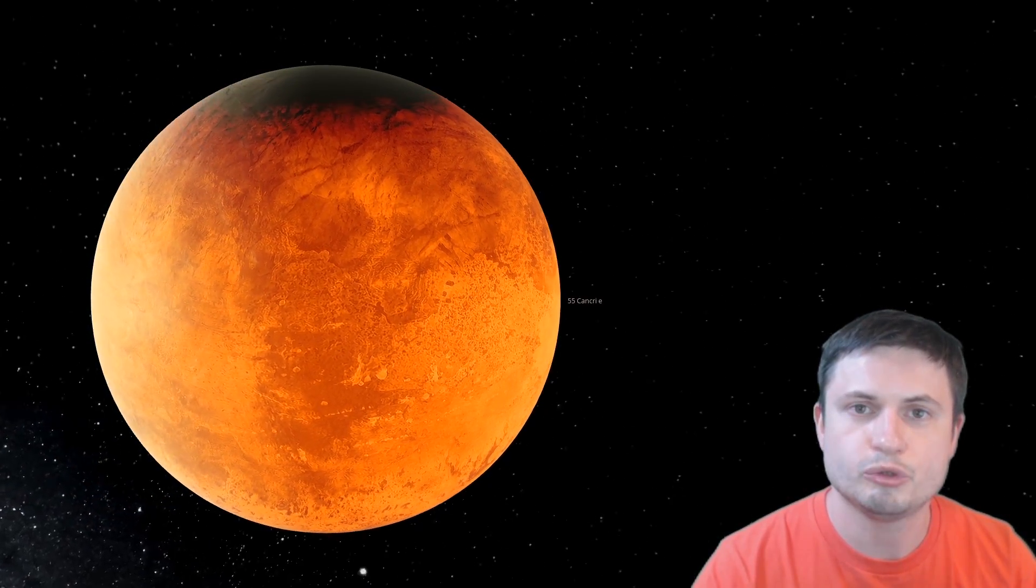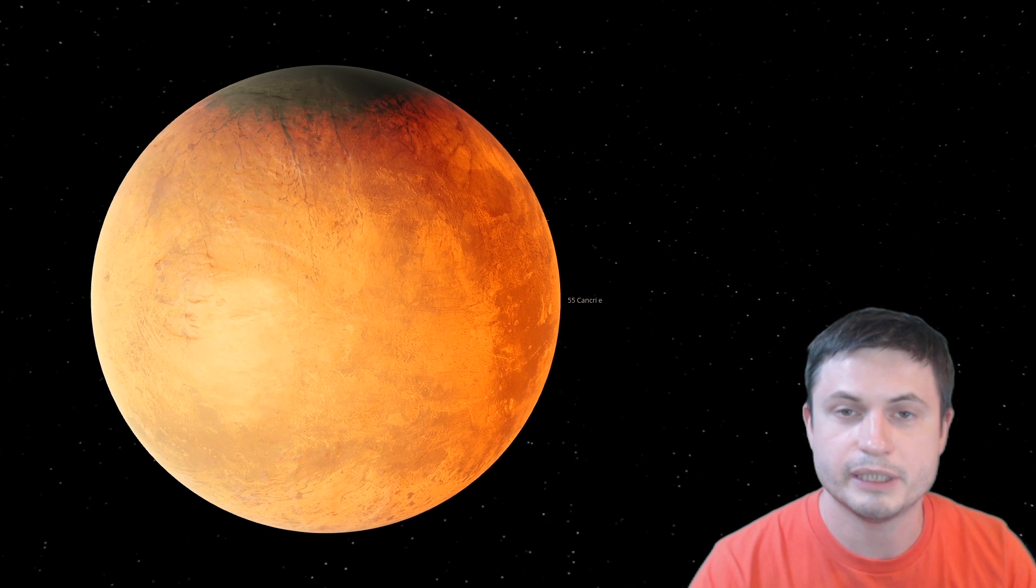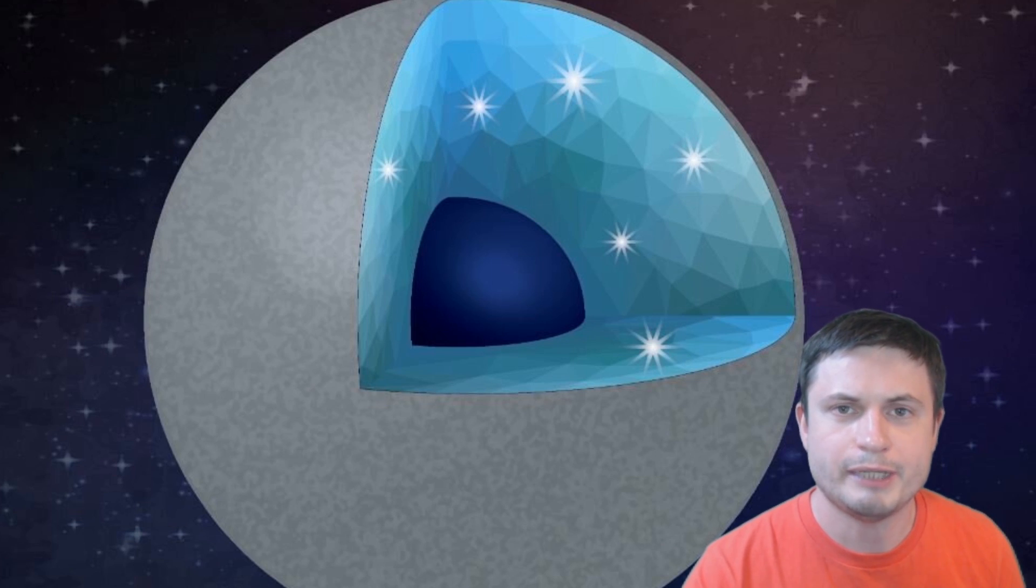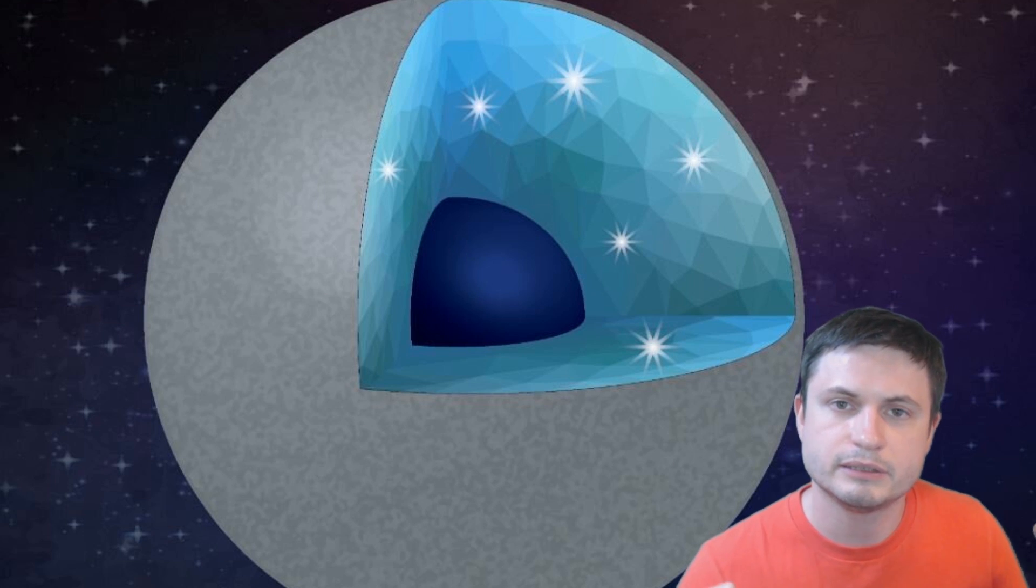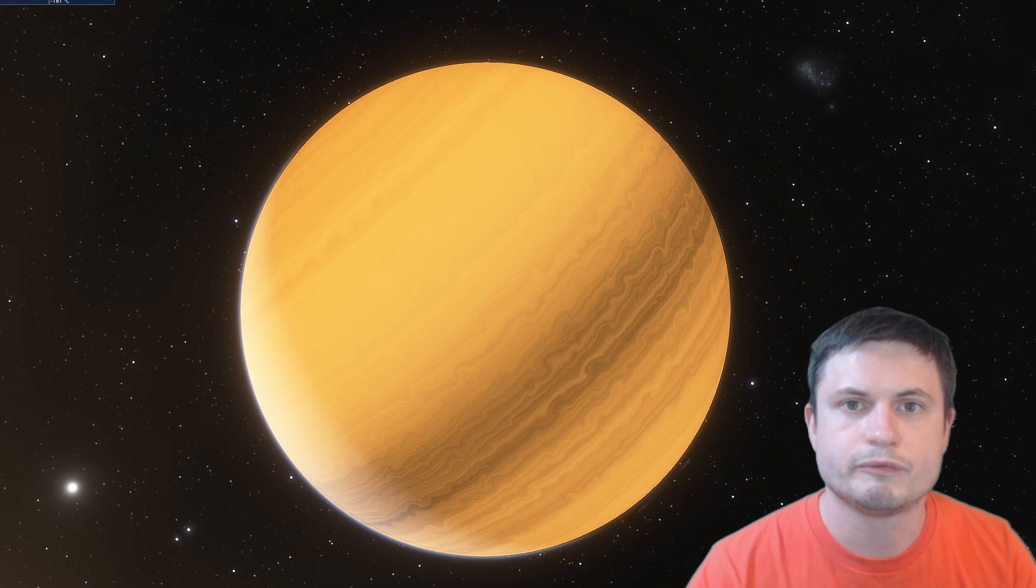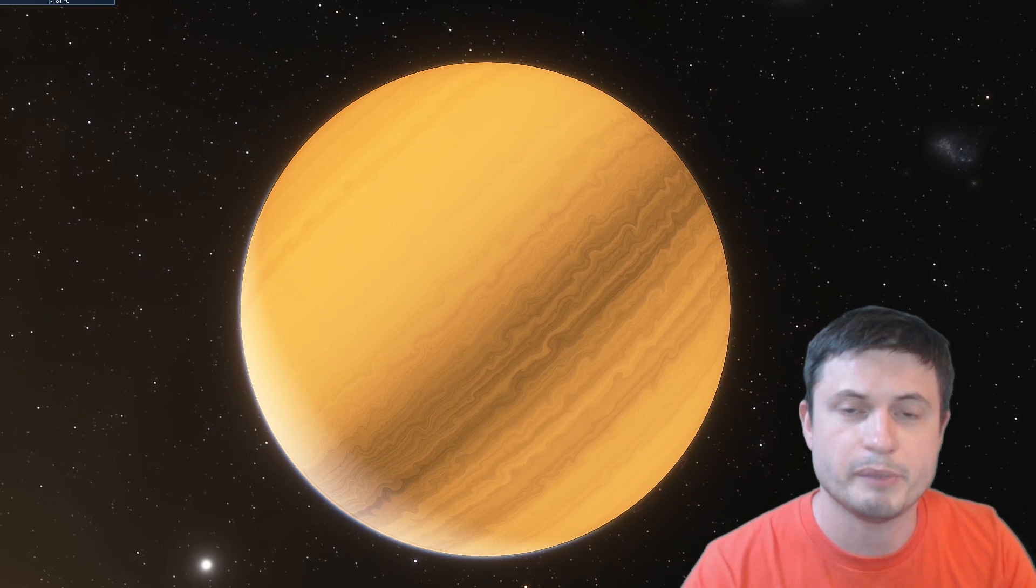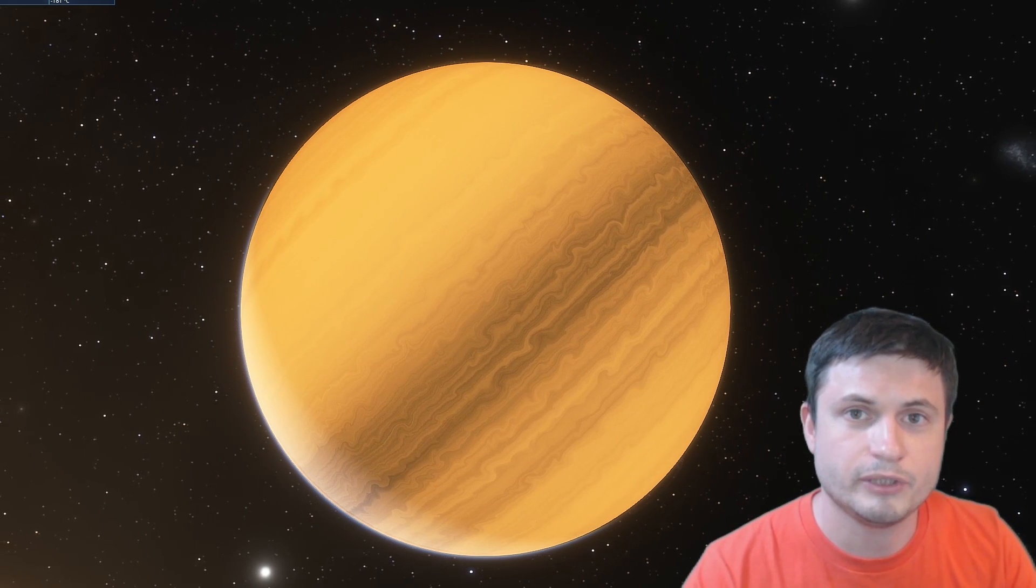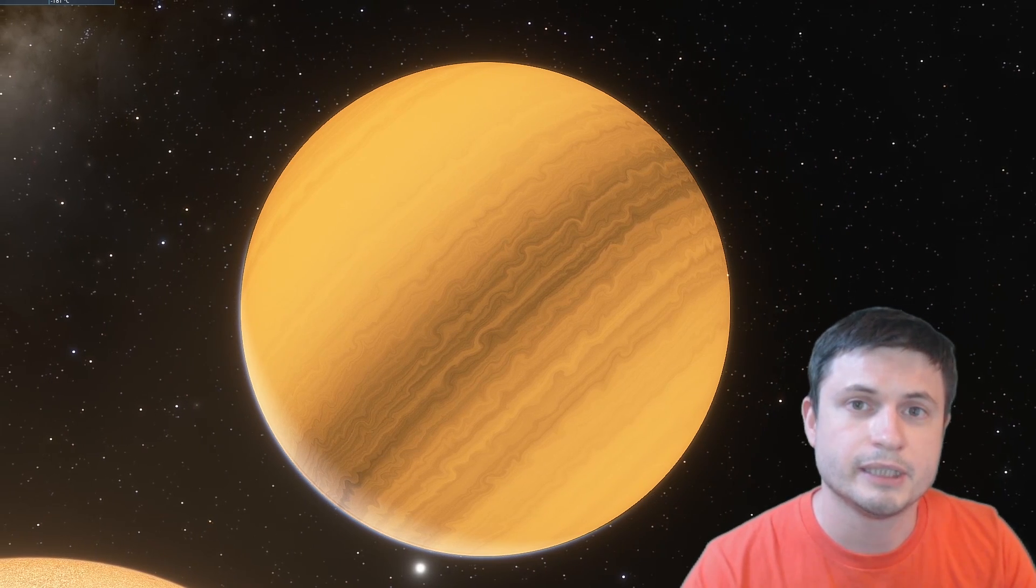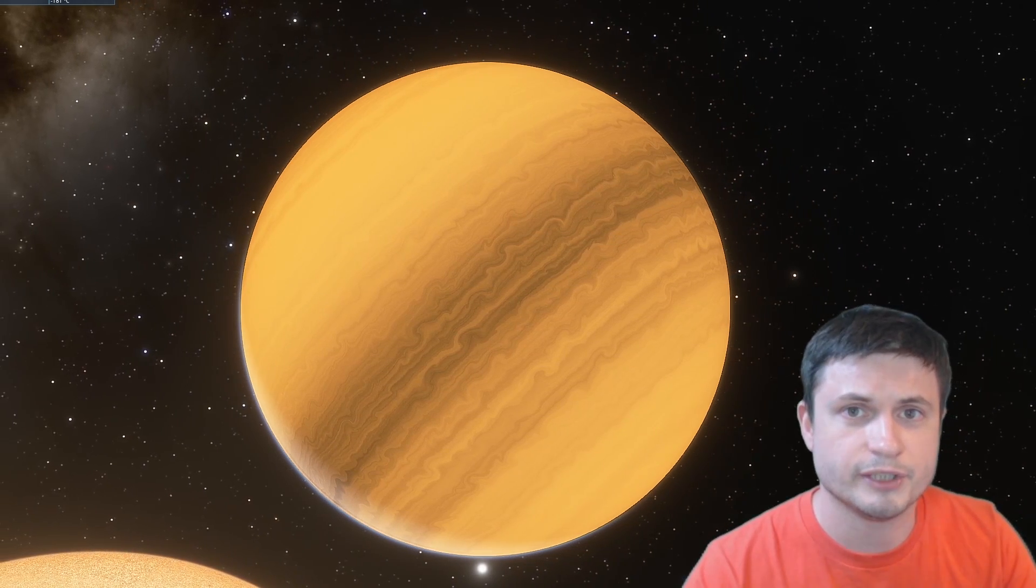Most importantly though, we now have a pretty good idea on how to possibly identify these carbon planets. The scientists behind the study were able to identify that the carbon layer would actually create very specific density changes in the planet, making the planet a little bit bigger than it should be. So if we do discover a planet that we're certain is a carbon planet and we are able to determine its size and of course its mass, we'll then be able to tell if it is a diamond planet after all.